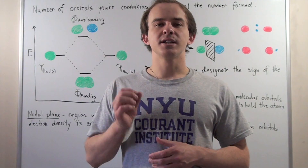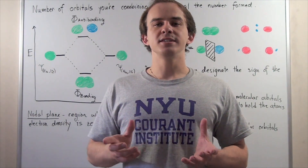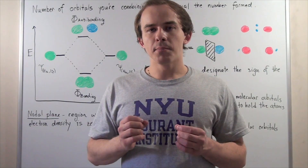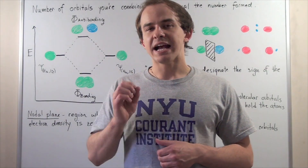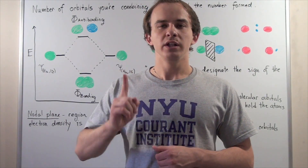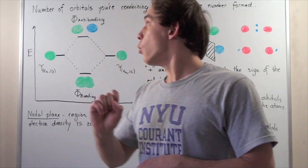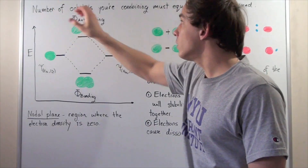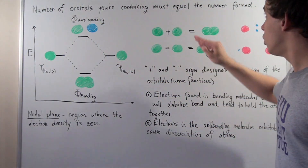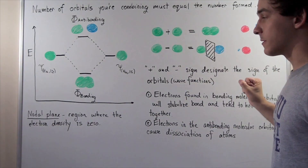We began our discussion on molecular orbitals. According to quantum mechanics, the number of atomic orbitals that we're combining must exactly equal the number of molecular orbitals that we are forming. The number of orbitals you're combining must equal the number that you are forming.